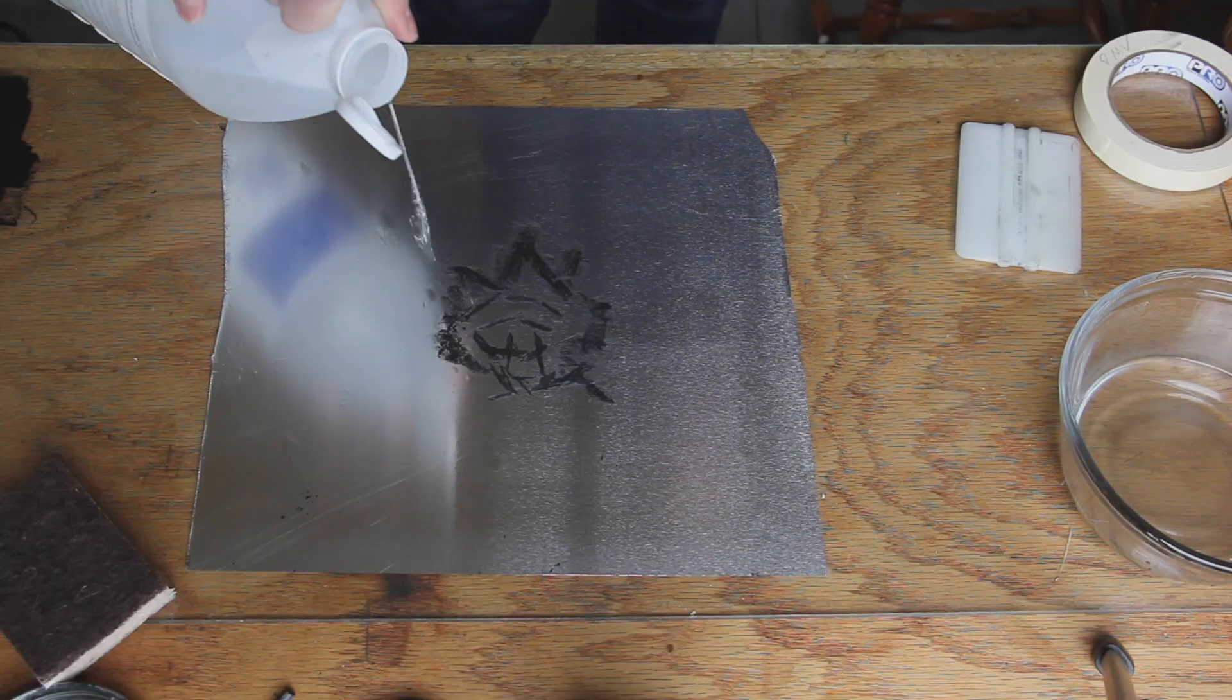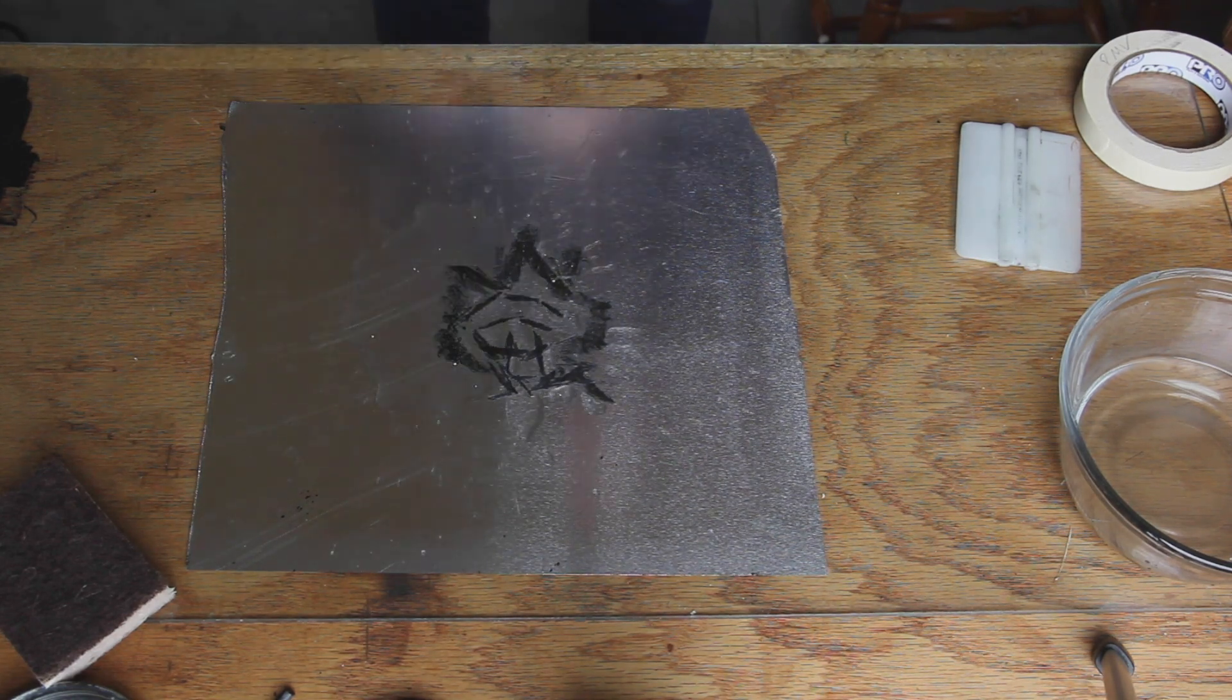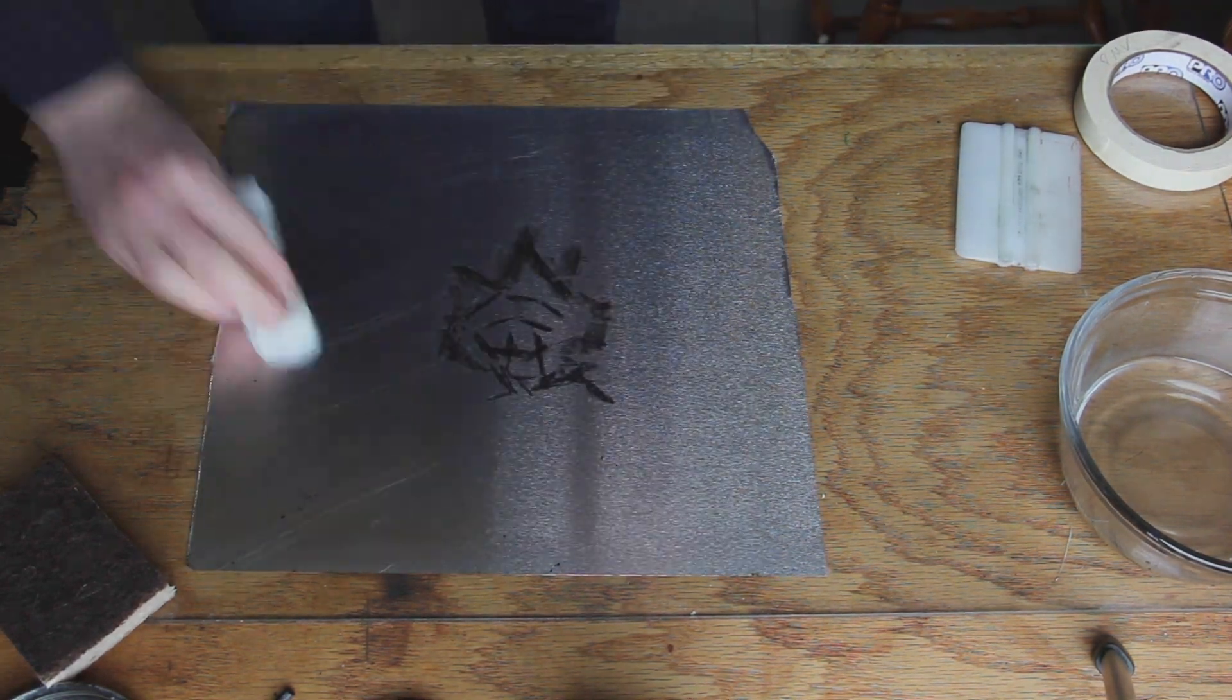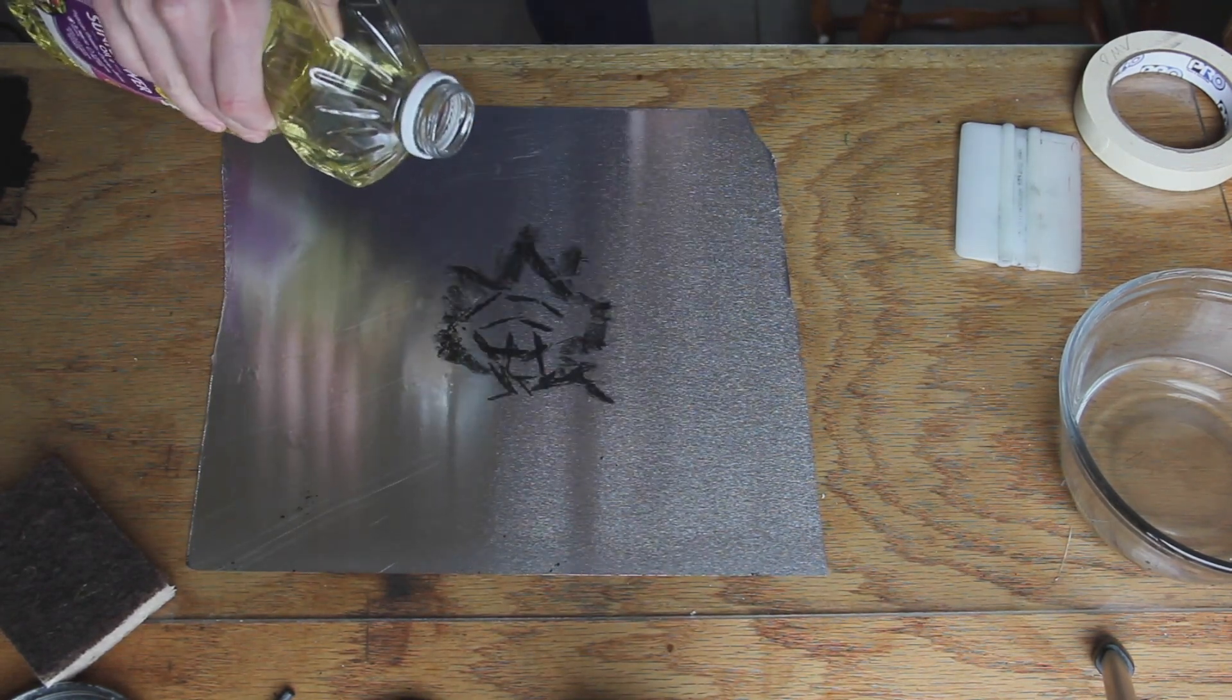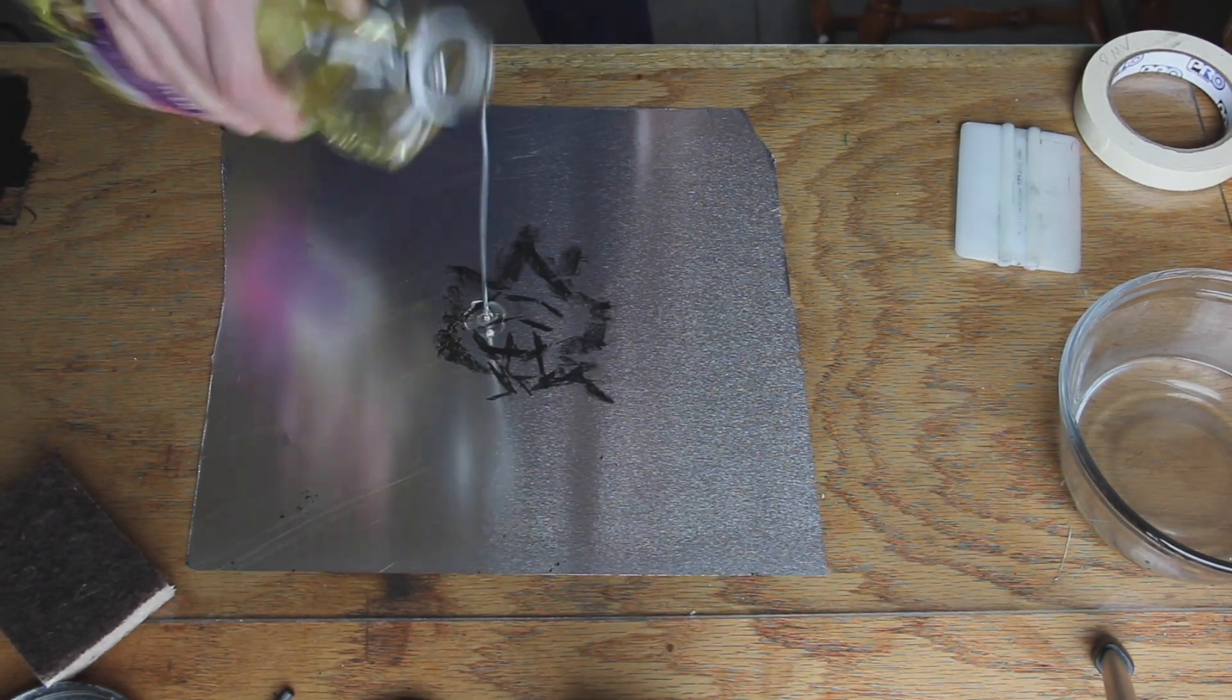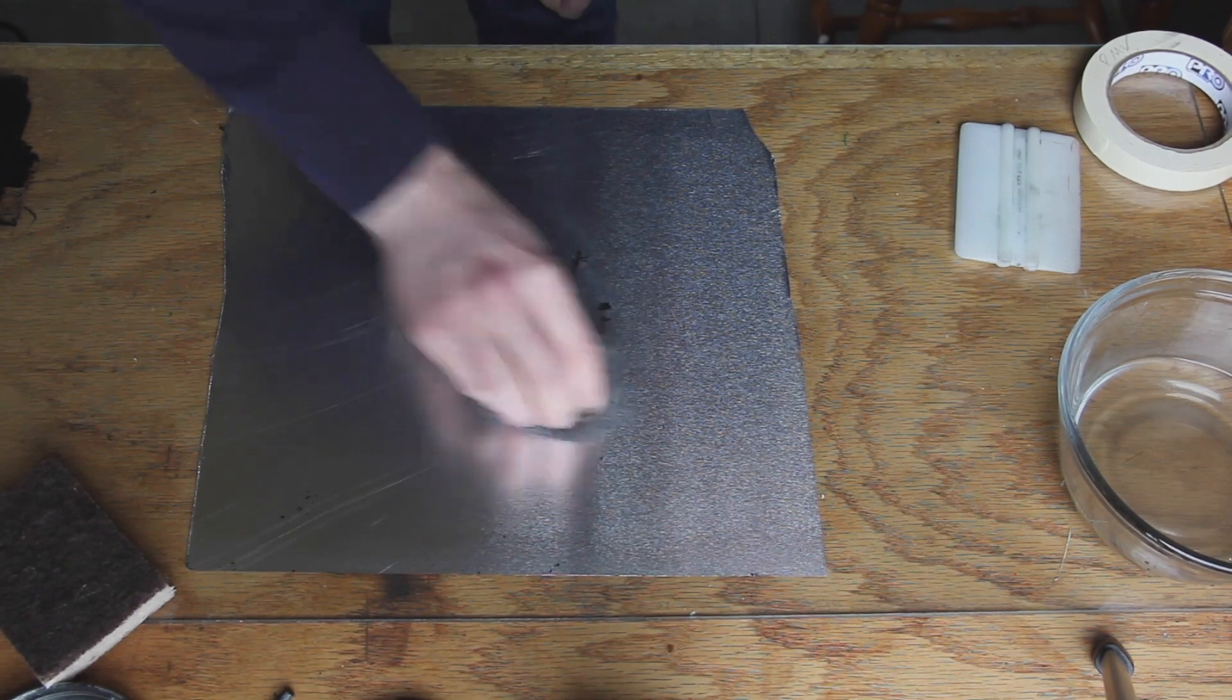I'm trying again and this time I'm skipping the tape and I'm skipping the sanding. I'm just trying to do something similar to what I had tried in the past and I have only used the crayon here but again I'm using the white vinegar.